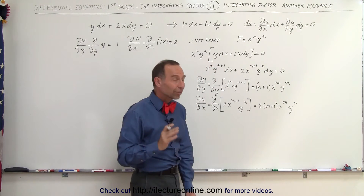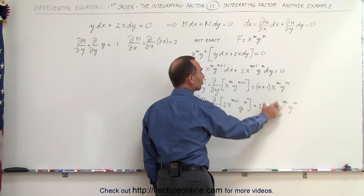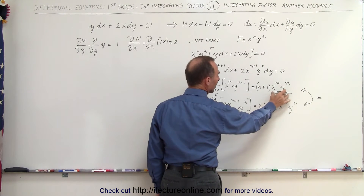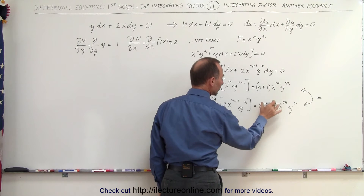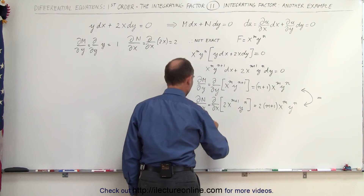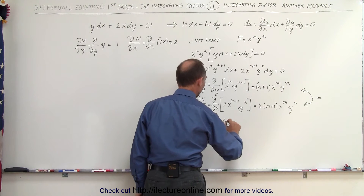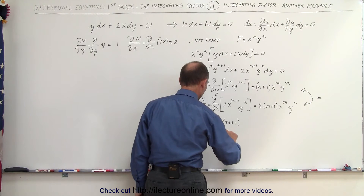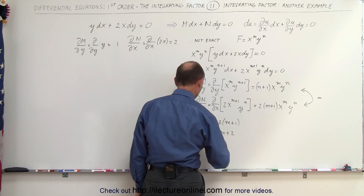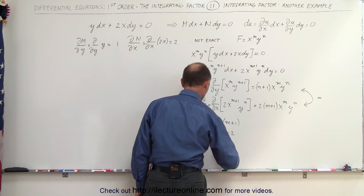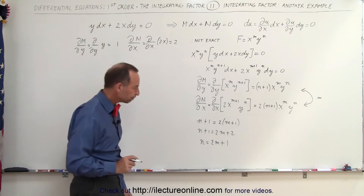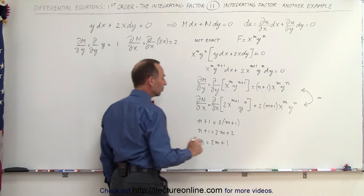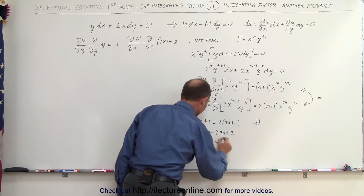For the equation to be exact, these two must be equal. Matching the x^m · y^n terms, we need n+1 to equal 2(m+1). Simplifying: n+1 equals 2m+2, so subtracting 1 from both sides gives n equals 2m+1. That is the relationship between m, the exponent of x, and n, the exponent of y.